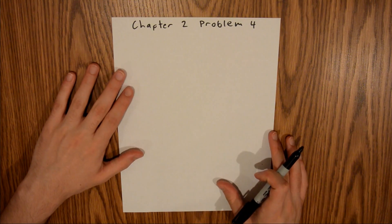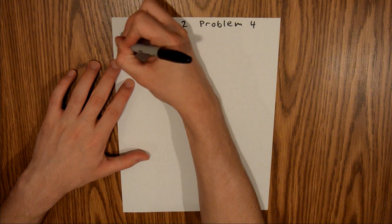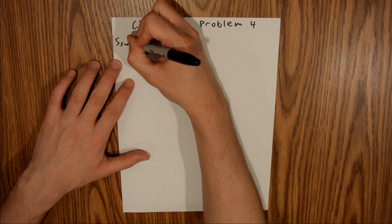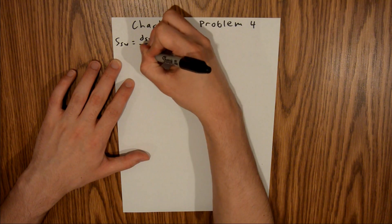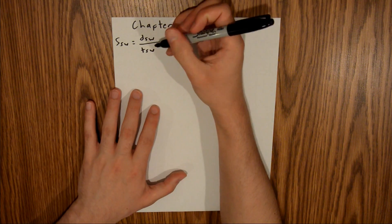The speed of SW is equal to the distance of SW divided by the time of SW. And since we are looking for the time, we can rearrange this by multiplying both sides by the time and dividing both sides by the speed.